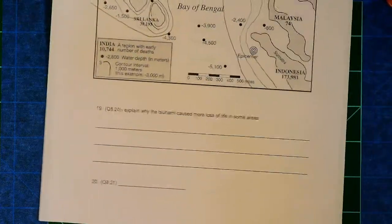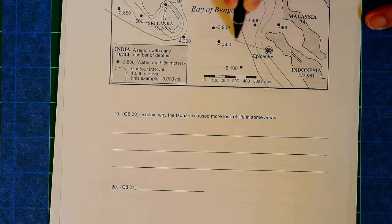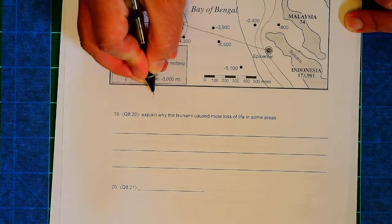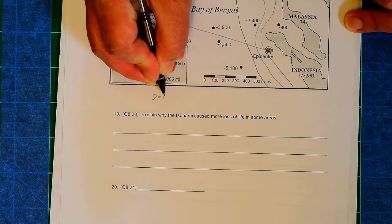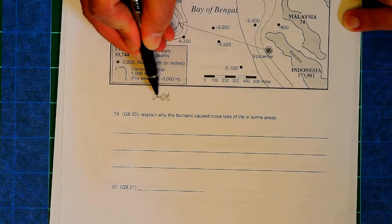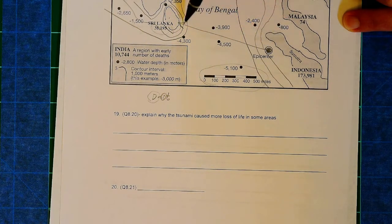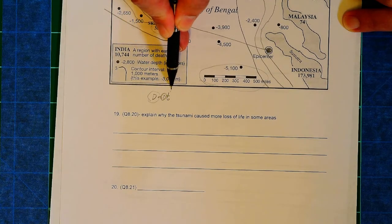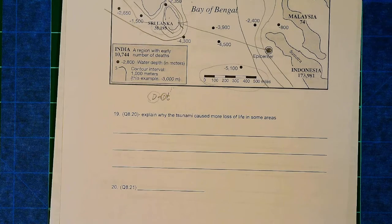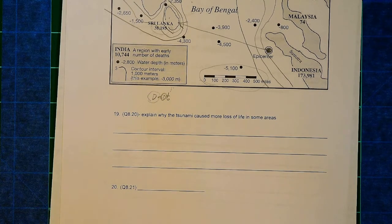Now, number 20 is going to ask you how much time it took for a tsunami to get from where it began here at the epicenter to the coast of Sri Lanka. And you can solve this by using the equation distance equals rate times time. Your lab manual will give you the rate. You measure the distance using that scale. Just measure the distance from the epicenter to Sri Lanka. And that just leaves you with time to calculate how long it took for that tsunami to get there. Now, of course, as with all things, if you have questions about this lab, please just let me know and I'll be sure to help you with it.